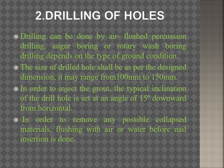Step two is drilling of holes. The drilling can be done either by means of air flush percussion drilling, auger boring, or rotary wash boring, depending on the type of ground condition. The drill hole size shall be as per the designed dimension, usually ranging from 100 mm to 150 mm. The typical inclination of the drill hole is set at 15 degrees downward from horizontal.